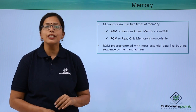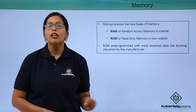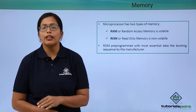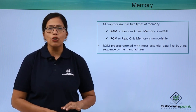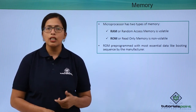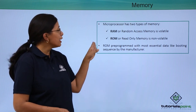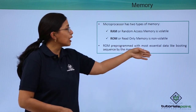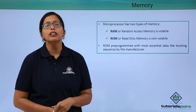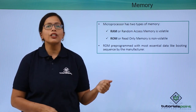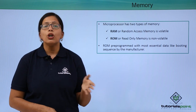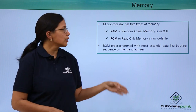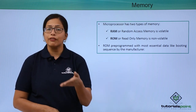RAM is volatile in nature, meaning that when we switch off the power to the microprocessor, whatever has been stored will be erased. ROM is non-volatile — even after the power has been switched off, the data stored on it is retained. The ROM is pre-programmed by the manufacturer with essential data like the booting sequence. When we switch on the computer, it needs to load the BIOS into primary memory, and that BIOS is stored in the ROM. If it were stored in RAM, it would be erased.